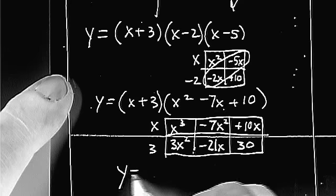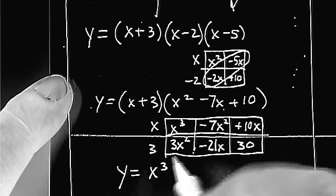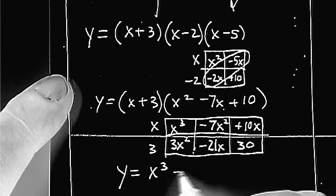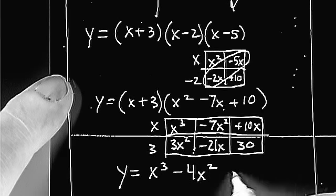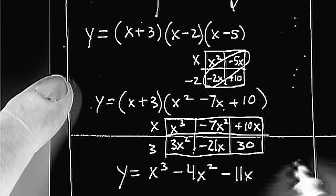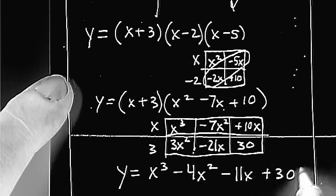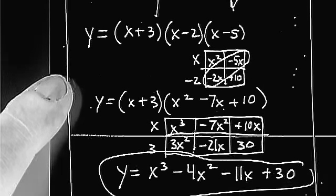So I can finally write my answer, x cubed, y equals x cubed, minus 4x squared, minus 11x, plus 30. And that right there is my equation.